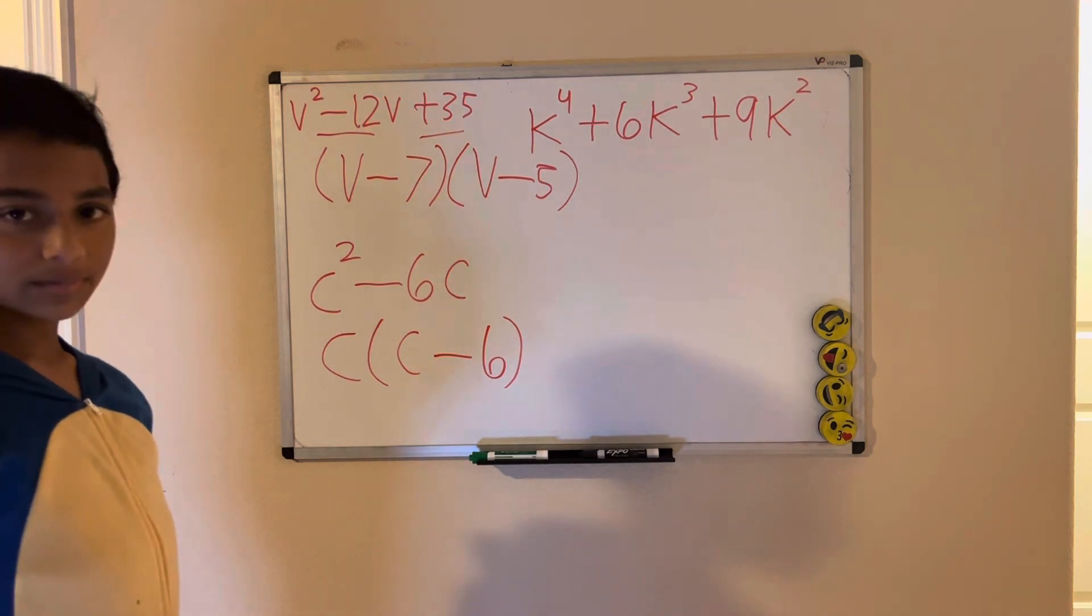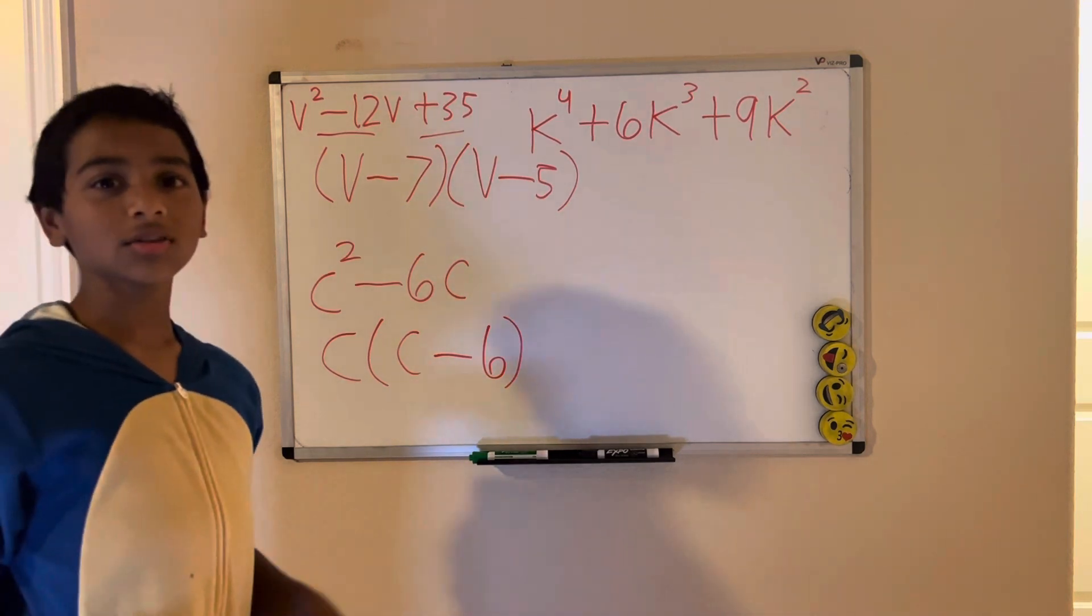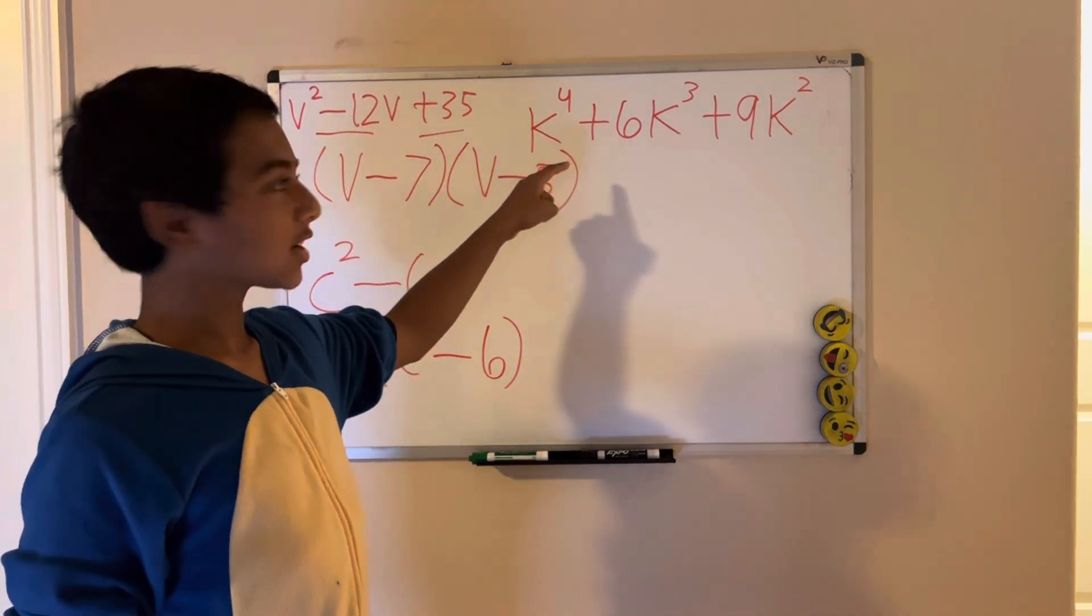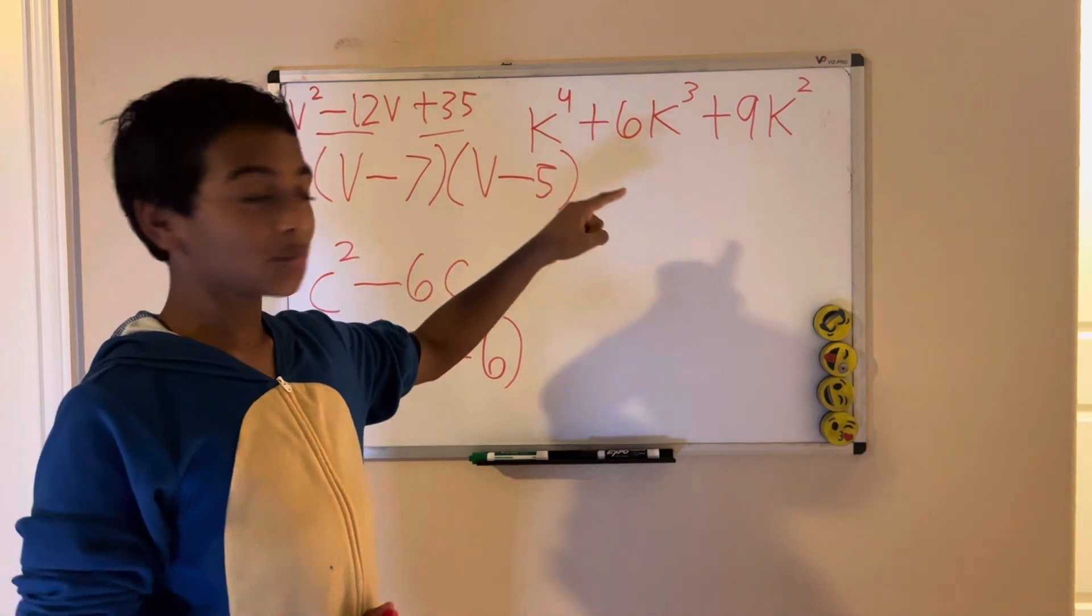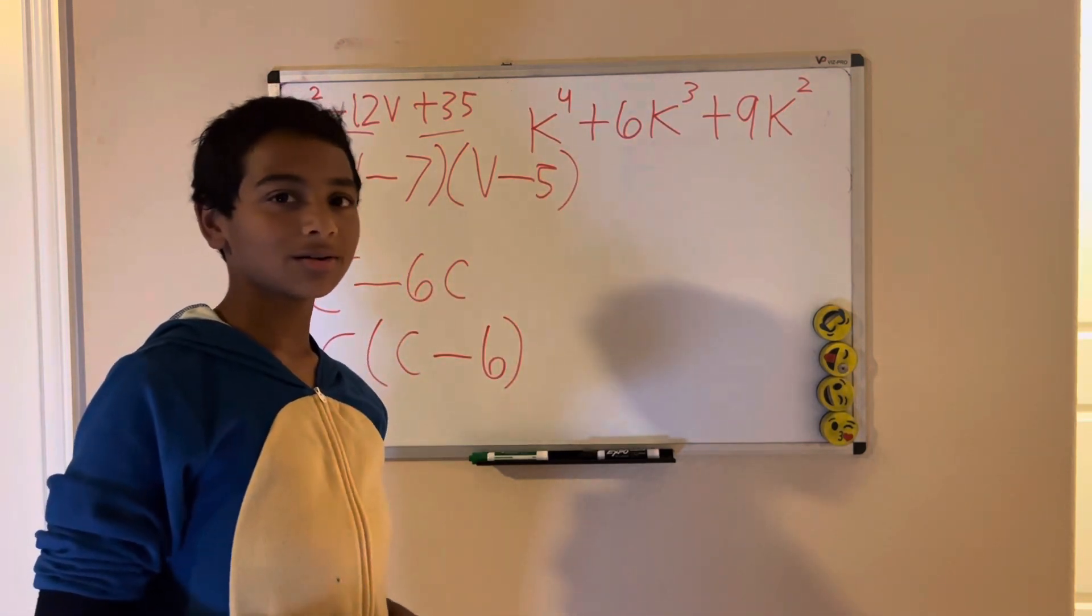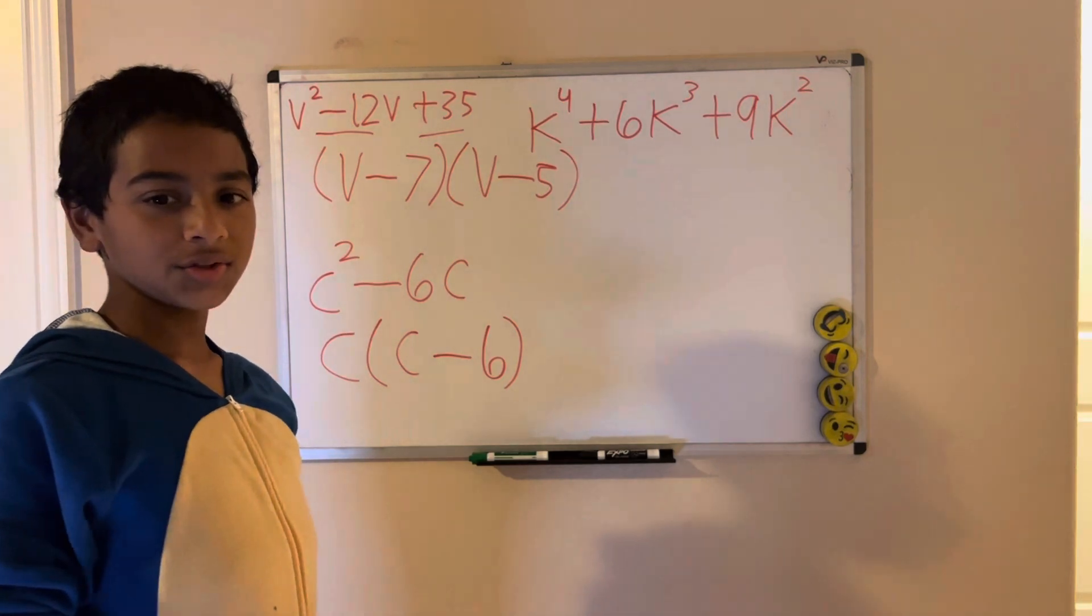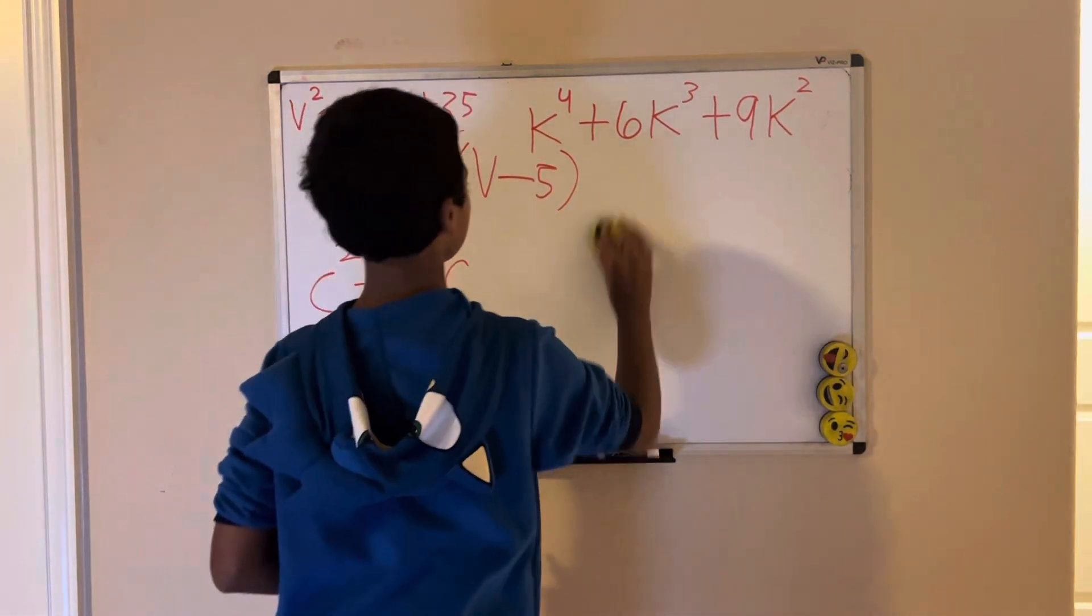Before I move on to the third example, if you haven't liked and subscribed to my channel, please do so. We have k to the fourth plus 6k cubed plus 9k squared. How would you factor this one? I'm going to erase this to give space.